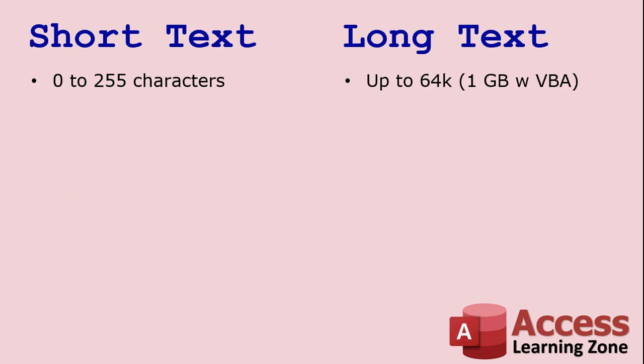Let's start out with how much information you can put in each type. Short text can store from 0 to 255 characters — usually used for small things like first name, last name, address, phone number. Phone numbers should be in a text field, not a number field. Only put data in a number field when you're going to be doing calculations on it. You're never going to be adding two phone numbers together, so that's a text field.